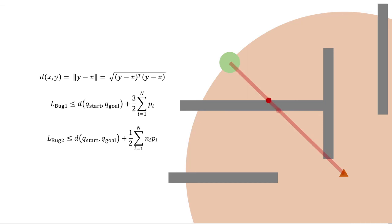To compare Bug 2 to Bug 1, we also define the number of intersections between the M-line and each obstacle. In the example shown, the robot intersects an obstacle four times. Bug 1 traverses the entire perimeter of each obstacle, so its path length increases by at least one full perimeter. However, if Bug 1 always chooses the shorter route back to the leave point after circumnavigation, the traversal per obstacle is at most three-halves of the perimeter.